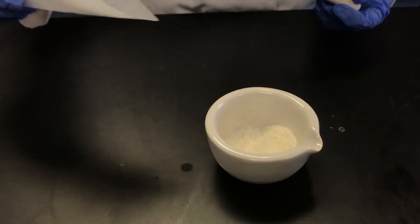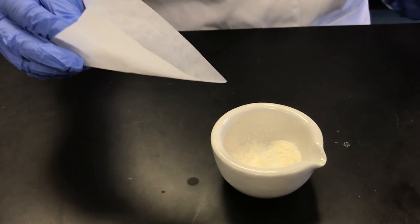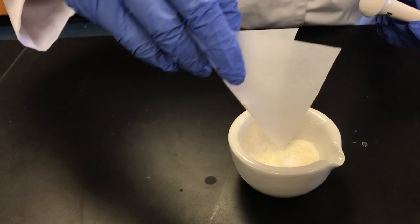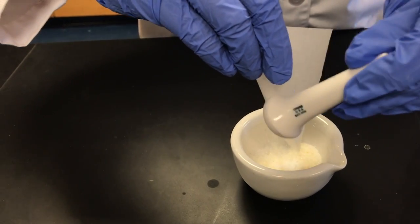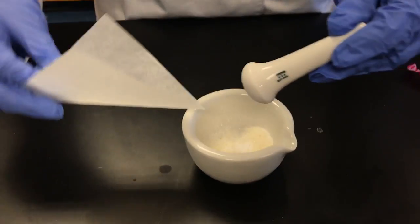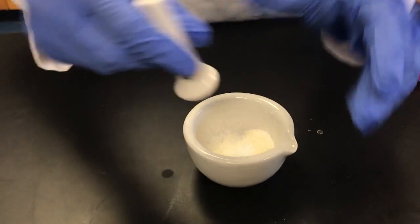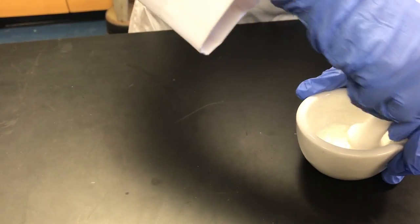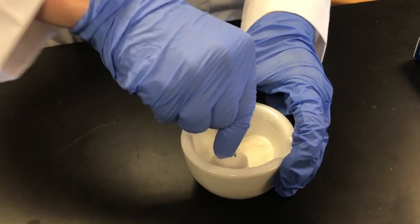To prepare sample number two, we're going to add the 0.1 grams of zinc gluconate into our fine powder that we crushed up from the lozenge. Make sure that you toss it about, and then you're going to do this for about two minutes. You're going to grind it together so that it's really evenly mixed. That's how you'll get a good reading on the XRF.